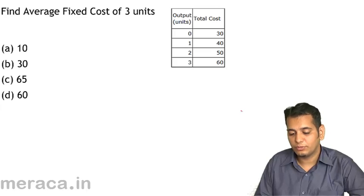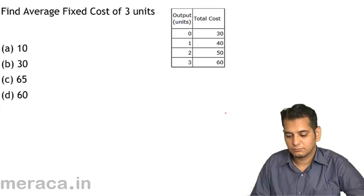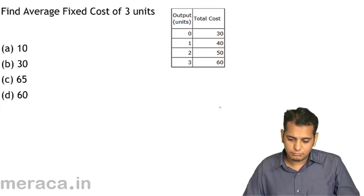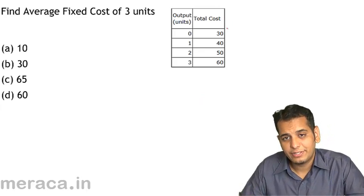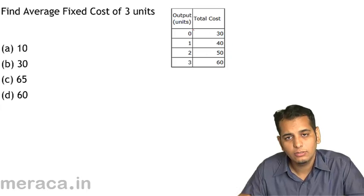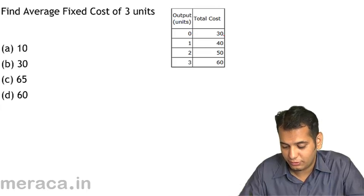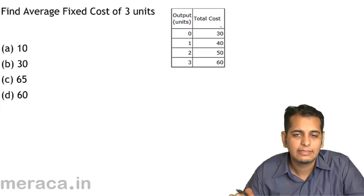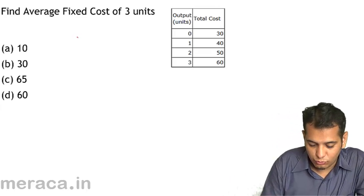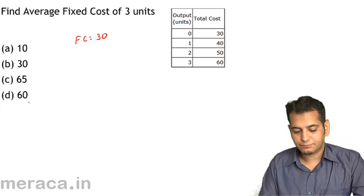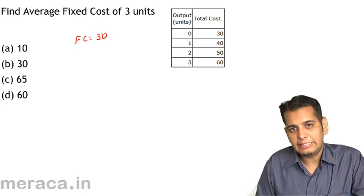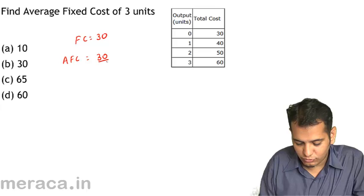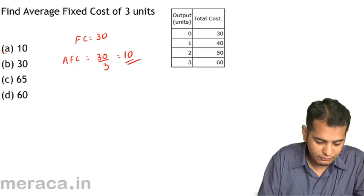Find average fixed cost for 3 units from a schedule. For 0 units the total cost is 30, meaning fixed cost equals 30, since when nothing is produced any cost incurred is fixed cost. Since fixed cost is 30 and remains constant, AFC for 3 units equals 30 divided by 3 equals 10.